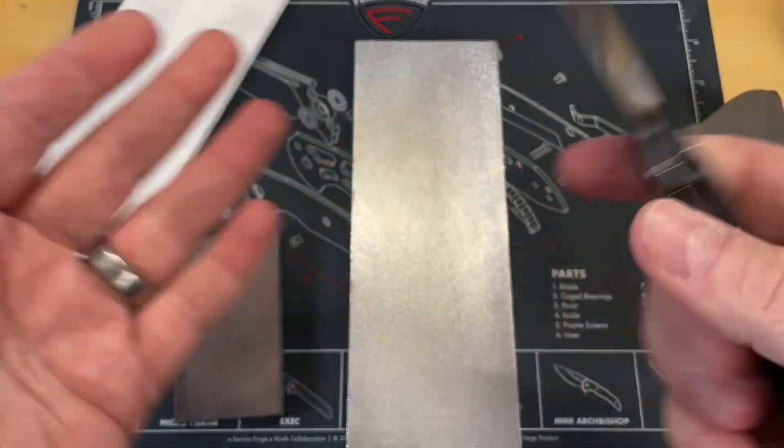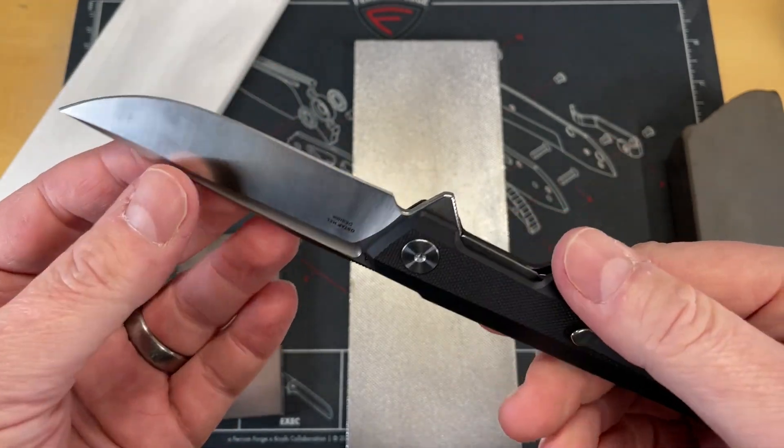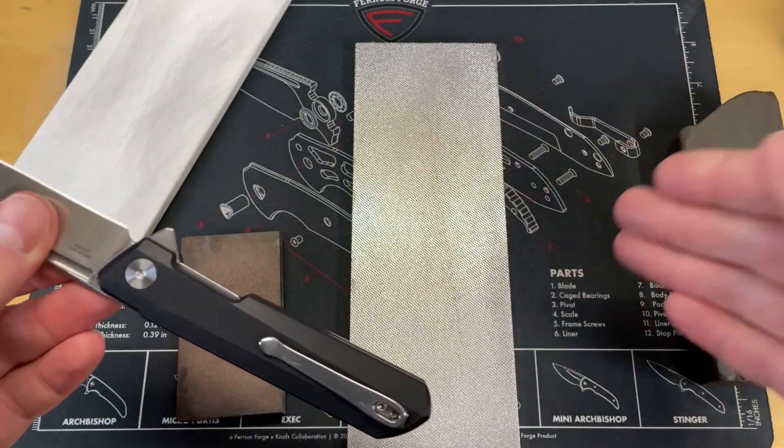So depending on the materials you're going to cut, you're going to have to pick and choose what coarseness do I want this edge to be at. You're going to have to pick the proper abrasives.